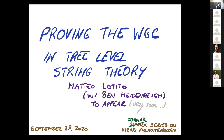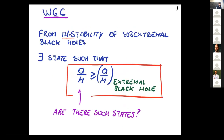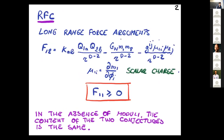I don't have time for motivation, so let me jump to a brief review of what the WGC states. The conjecture requires that there is a particle in the spectrum whose charge-to-mass ratio is larger than the one for an extremal black hole, as it was first stated. An alternative formulation of the WGC was already in the original paper, but nowadays goes under the name of the repulsive force conjecture, which relies on imposing constraints on long-range forces between the states in the spectrum.